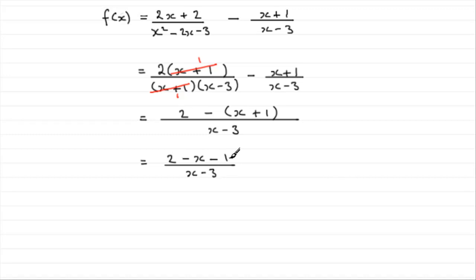2 minus 1, well that's 1. 1 take away x. And you're just left then with 1 minus x all over x minus 3. And there you have it. One fraction in its simplest form.